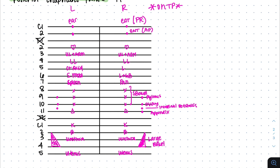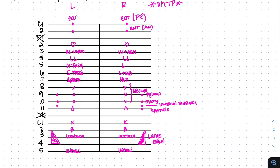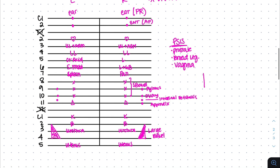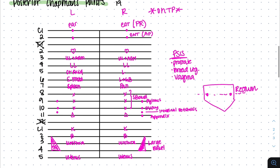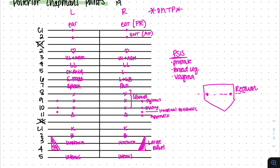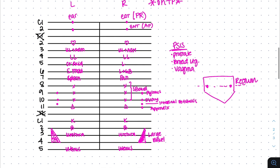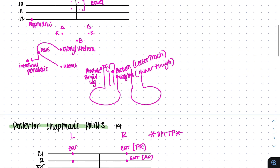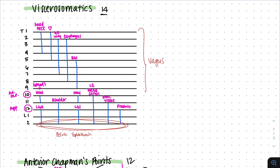On your PSIS, you'll have your prostate, broad ligament, and vagina. And this is my sacrum — the lateral middle sacrum is your rectum. This is a lot, but if you draw this a few times, you'll get it, and you can just dump this information immediately when you get to your test. Good luck!